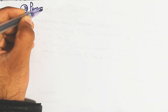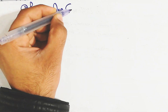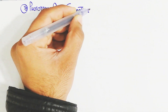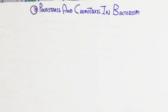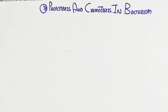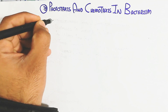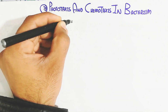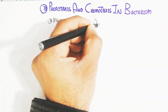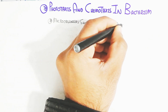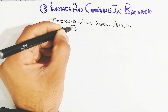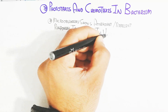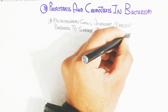In this video we will understand phototaxis and chemotaxis in bacteria. Phototaxis and chemotaxis refer to the movement of bacteria toward light or toward a chemical, or away from a chemical, for survival. Microorganisms show attractant or repellent responses to photons or chemicals.